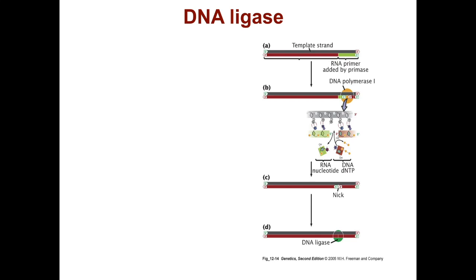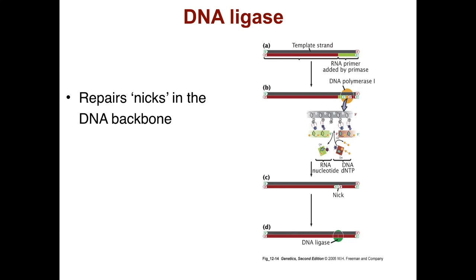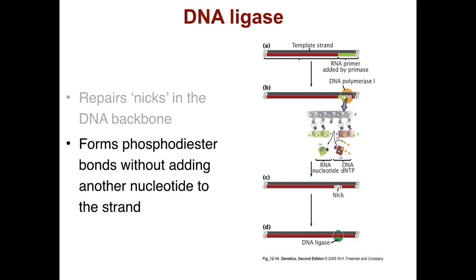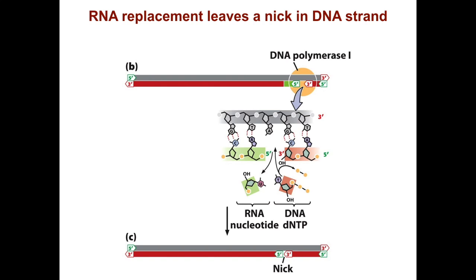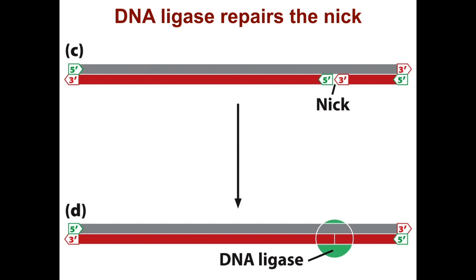DNA ligase is another important part of the DNA replication story. It repairs nicks in the DNA backbone and forms phosphodiester bonds without adding another nucleotide to the strand. When DNA polymerase 1 replaces RNA with DNA, you are removing the RNA primer that was added by the primase and replacing it with DNA. The RNA replacement leaves a nick in the DNA strand, and DNA ligase repairs the nick — this is a very important function for this protein.